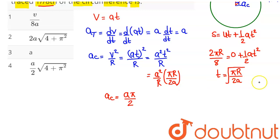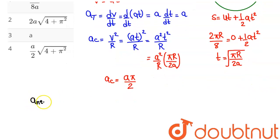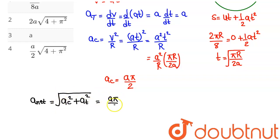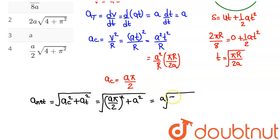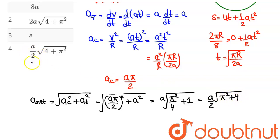The net acceleration is the resultant of centripetal and tangential accelerations, since they are perpendicular to each other. So net acceleration = √(ac² + at²) = √((aπ/2)² + a²). Taking a² common: a·√(π²/4 + 1) = (a/2)·√(π² + 4). This matches option 4, which is the correct answer.